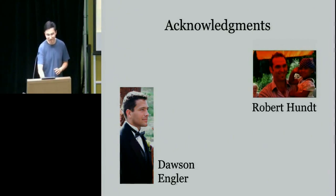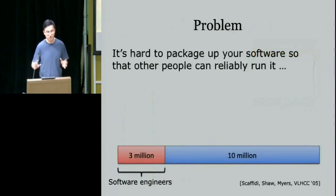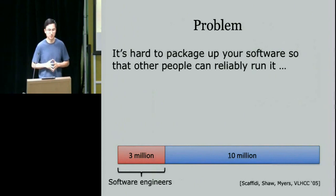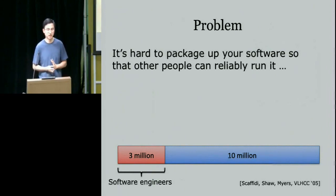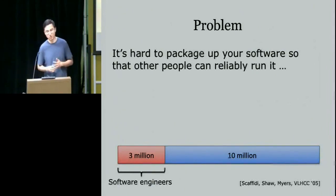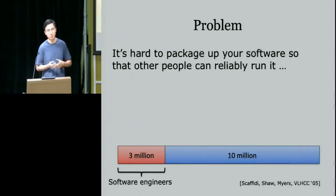I want to introduce the problem domain and convince you of why it's a pervasive and important problem. The problem has three parts. The first part is that it's hard to package up your software so that other people can reliably run it. Anyone who's ever hacked on code knows that if you want someone else to run your code, it's non-trivial — you have to actually package it up so that when you give it to somebody else, they can run your software.